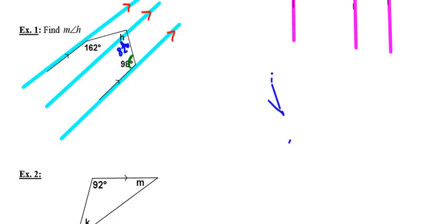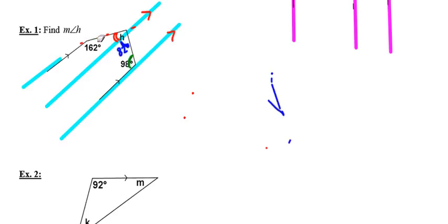Likewise, looking at this red angle of 162 degrees, it's same-side interior to the angle inside the parallel lines. If I think about the red line as my transversal, they're both on the same side of that transversal inside the parallel lines. So this angle must be 18 degrees. That therefore makes angle H the sum of those two — 82 plus 18 — or 100 degrees.